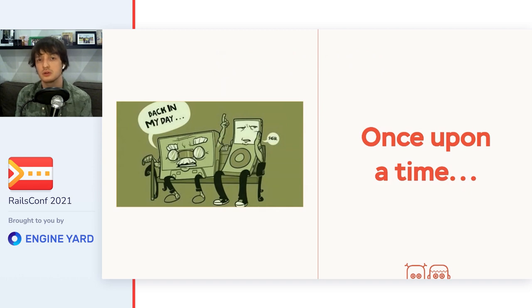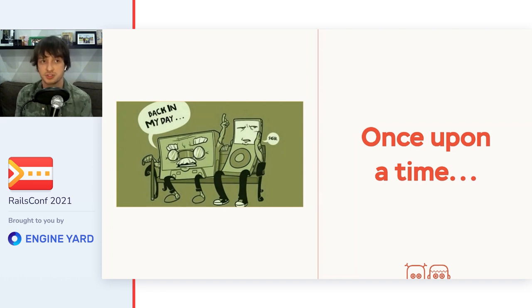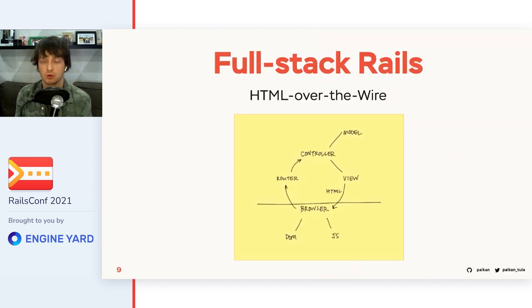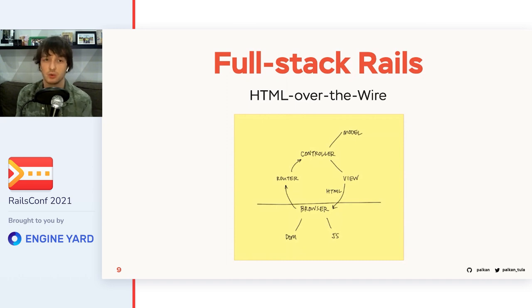Let's take a quick look at the past and remind ourselves how our ecosystem looked when we were building Rails applications without needing to learn frontend frameworks and all that modern stuff, and what happened to that way of building web applications. The core principle of Rails full-stack development is HTML over the wire. The server is the only source of truth and is responsible for what end users see — power to the server.